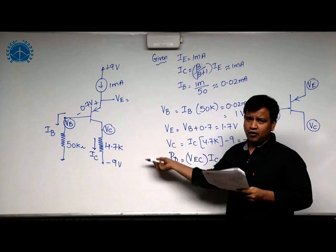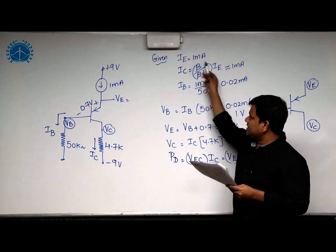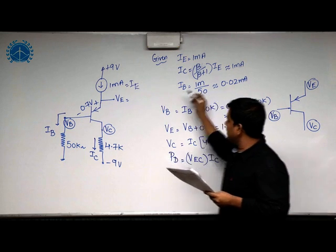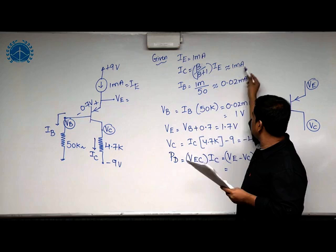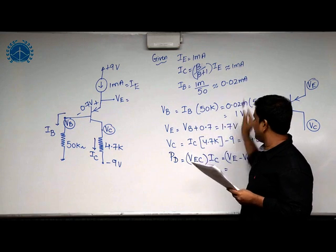Let us calculate all the node voltages and currents. Ie is given 1 milliampere here and what is the relation between Ie and Ic? Ic is beta by beta plus 1 into Ie, this is approximately 1 milli. Ib is 1 milli by beta is 0.02.